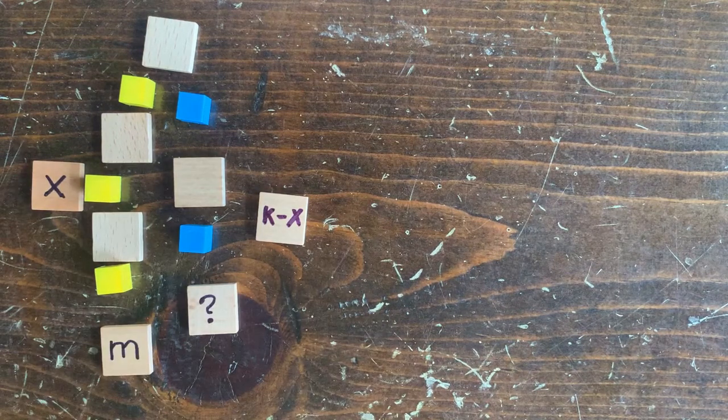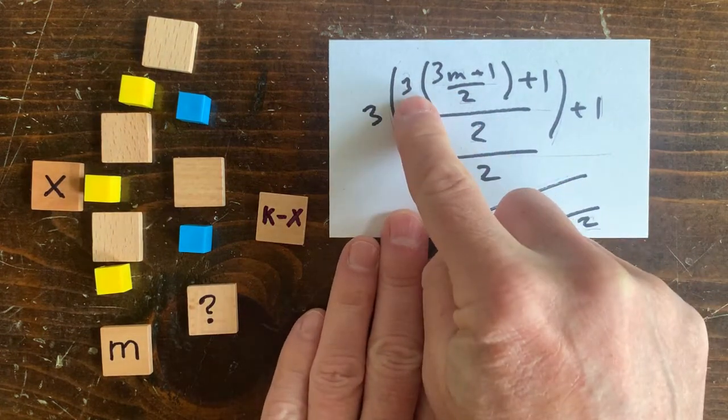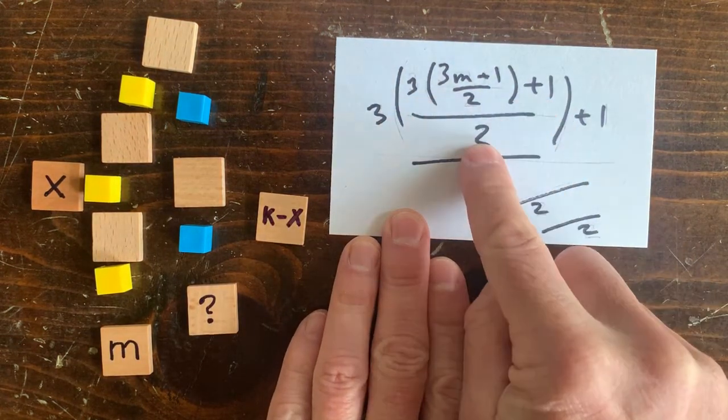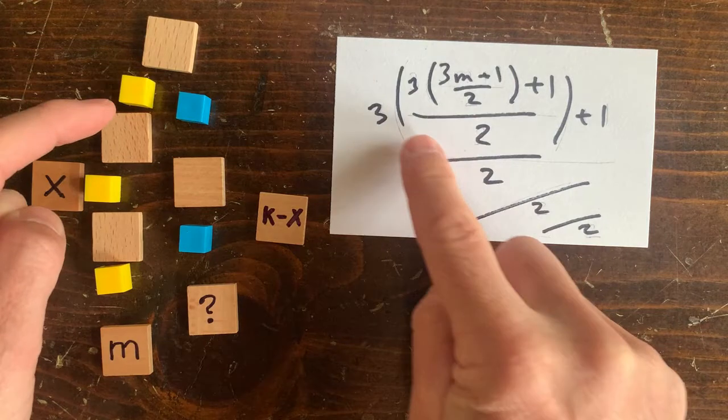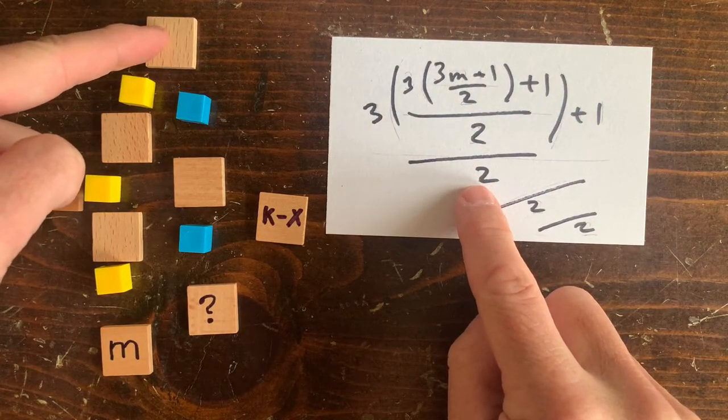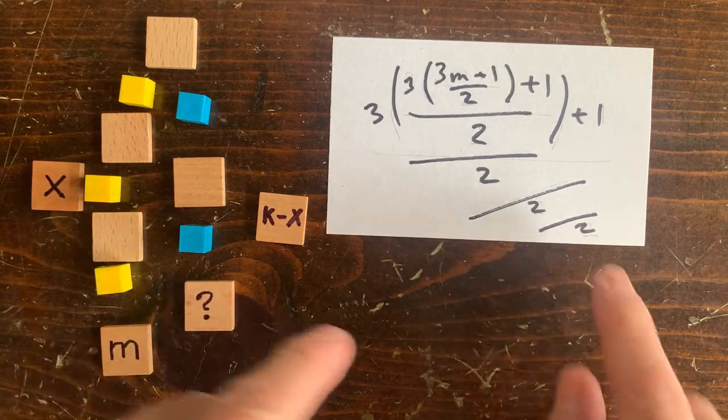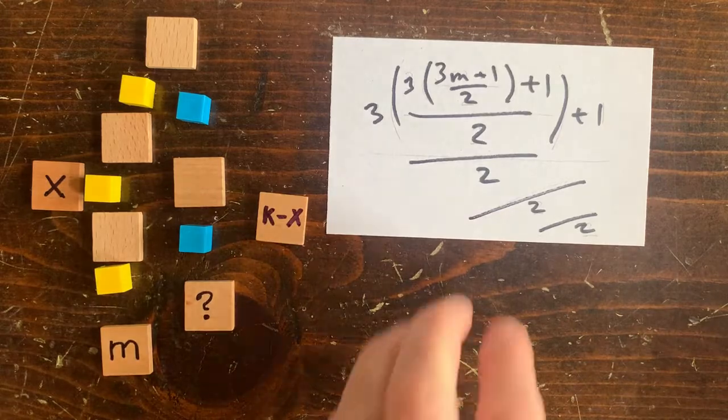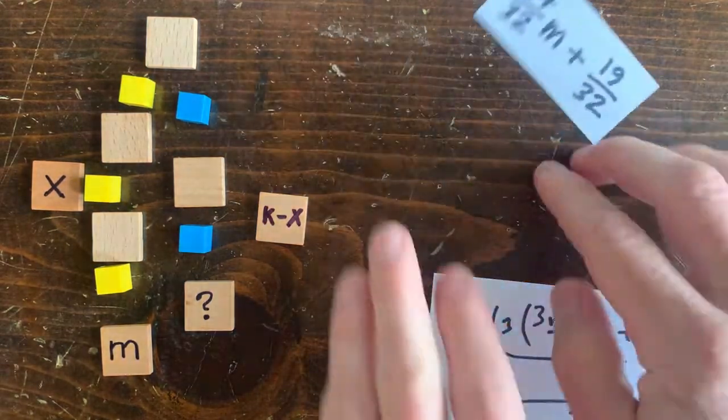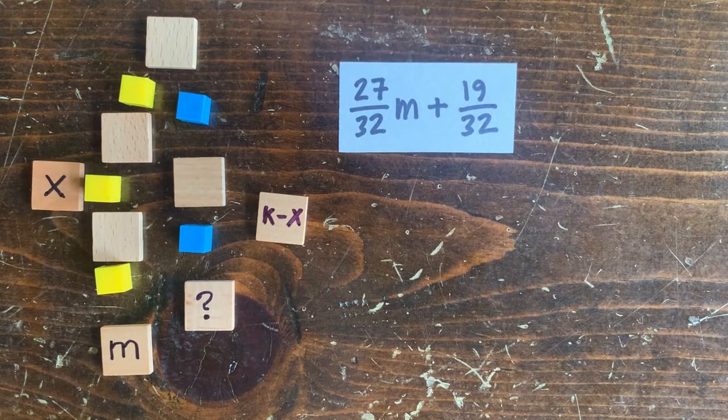We start with m. We make it 3m plus 1 over 2. And then we triple that and add 1, divide by 2. And then we triple that and add 1, divide by 2. Now we got the value here, which we cut in half and then cut in half again. So that's a nasty formula. But with some work, we can simplify it down to just 27 over 32 m plus 19 over 32.